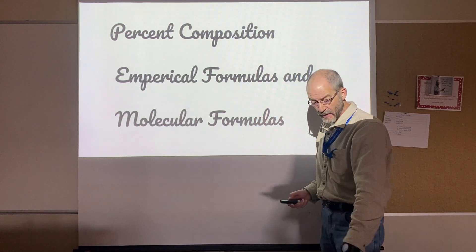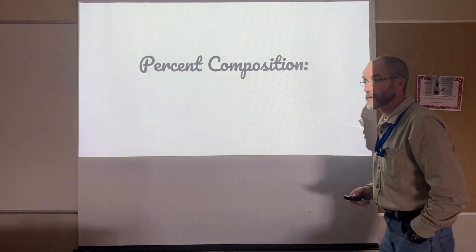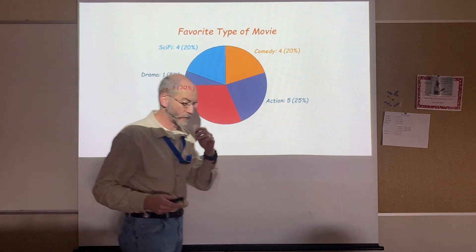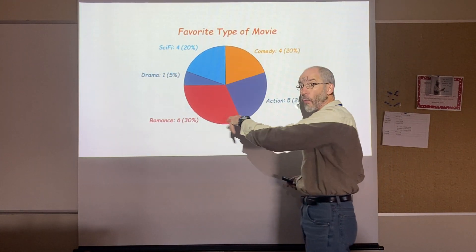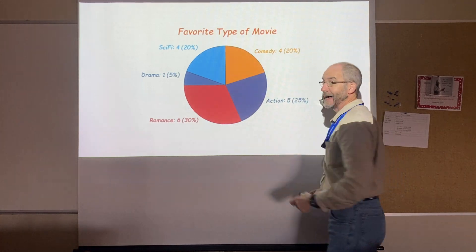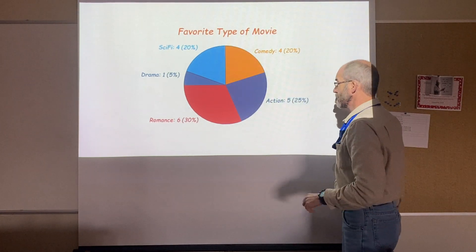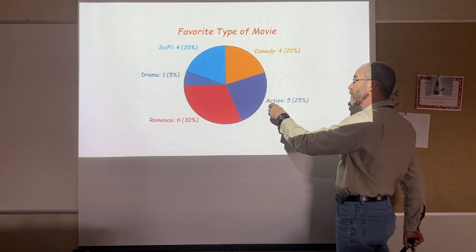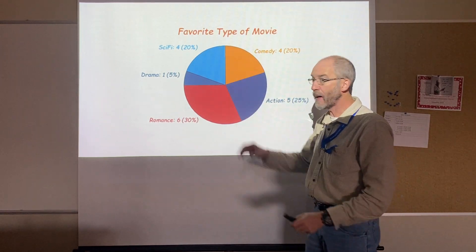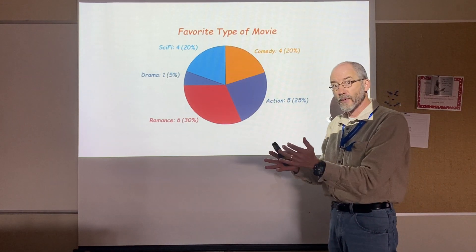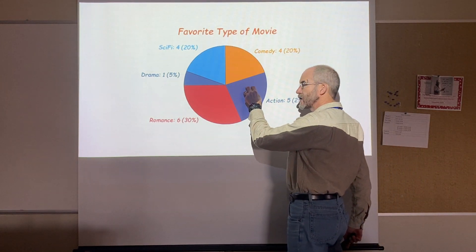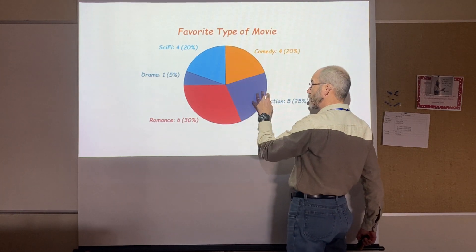Composition just means making something up. Most folks really kind of intuitively understand what percent composition means because most people have seen a pie graph. A pie graph represents 100% — the pie represents the whole. We can take different pieces of pie. This particular graph says favorite type of movie, and 25% of the people who responded said their favorite movie was an action movie. That piece represents that much of the pie — a certain part of the whole.